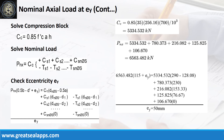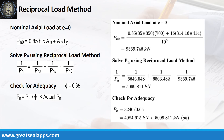Follow the given computations for the final check of eccentricity at y-axis of 50 mm. The nominal axial load at eccentricity equals 0 is 9,369.746 kN. By using the reciprocal load method, the nominal axial load is 5,099.811 kN. Check for adequacy: the nominal design load of 4,984.615 kN is less than 5,099.811 kN actual load capacity — the design is adequate.